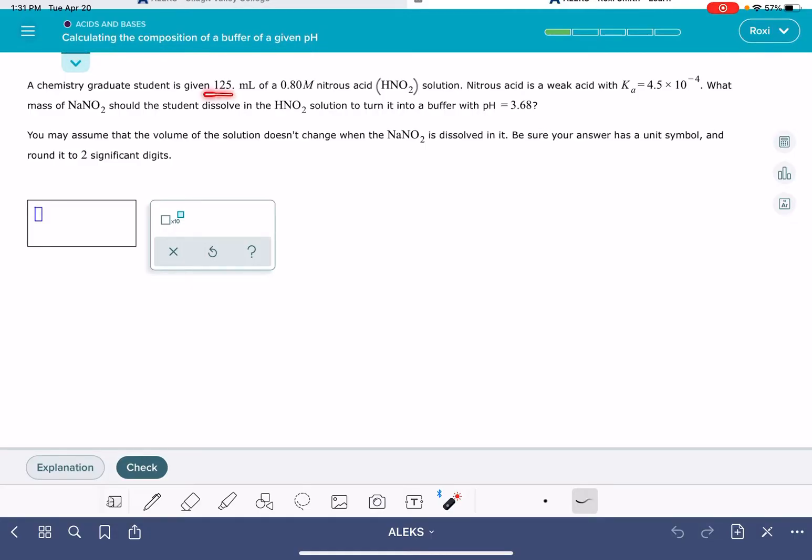In this problem, you'll be given the volume and the concentration of either a weak acid or a weak base. You'll be given a Ka value or maybe a Kb value or pKa, pKb, something like that.